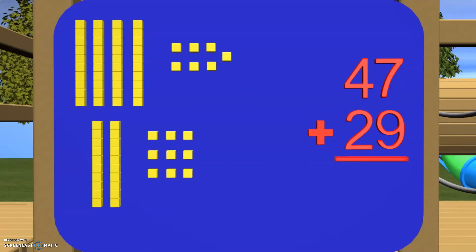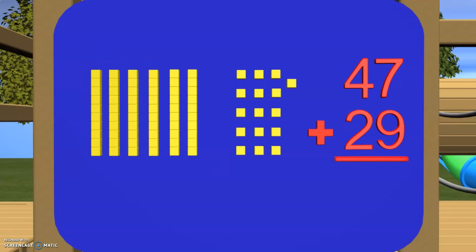Now we do the same as before and put all of our tens together and all of our ones together. Let's start by adding our ones together. We have 1, 2, 3, 4, 5, 6, 7, 8, 9, 10.